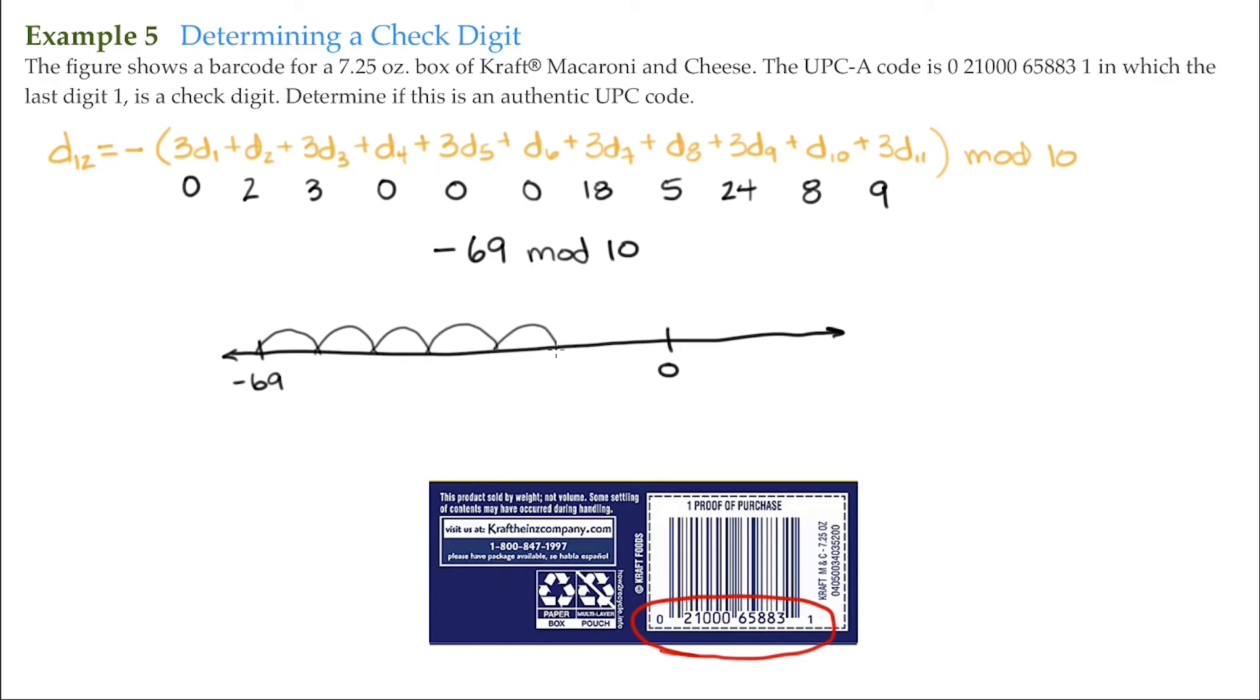29, 19, negative 9, and we come back 10 more and we're right at 1. And of course that's exactly what our digit is, it's 1. So it seems this is an authentic code for our Kraft macaroni and cheese.